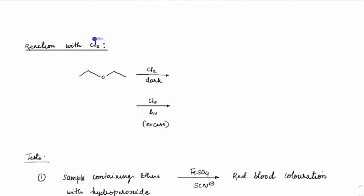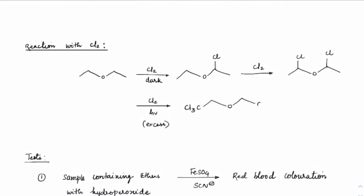Now check out: if instead of oxygen you react ethers with chlorine. In the dark, the reaction is slow and we will see mono-substitution happening. Chlorine gets added by radical mechanism at the alpha position. But if you expose it to sunlight and in excess amount, you would see all hydrogens replaced by chlorine — we will get Cl₃ groups, giving (C₂Cl₅)₂O. If you add chlorine in dark, monochlorination is observed.